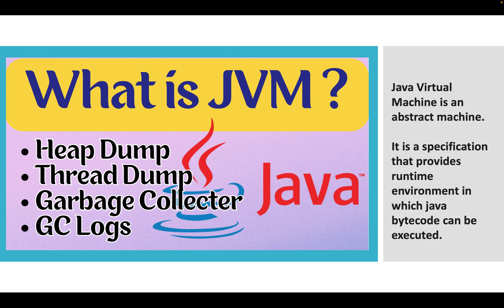So what is JVM? JVM is used for all kinds of applications developed in Java. It stands for Java Virtual Machine — it's an abstract machine and a specification that provides a runtime environment in which Java bytecode can be executed. You write Java code, it is compiled, and then when it is running, JVM is used. To troubleshoot issues we have heap dump, thread dump, garbage collector, GC logs — these help us identify issues related to memory leaks and resource utilization, which is very important from a monitoring point of view.